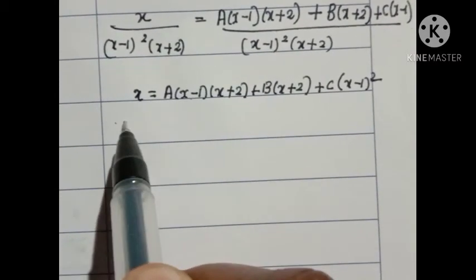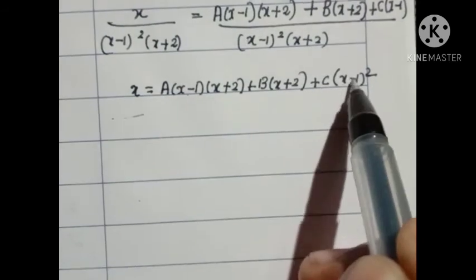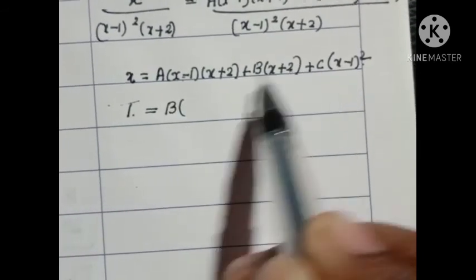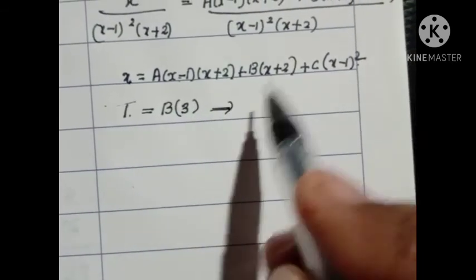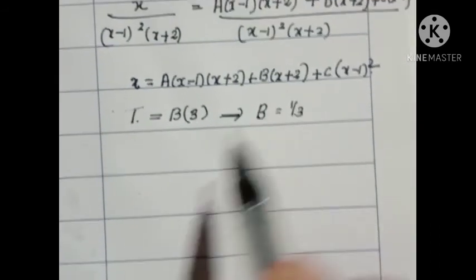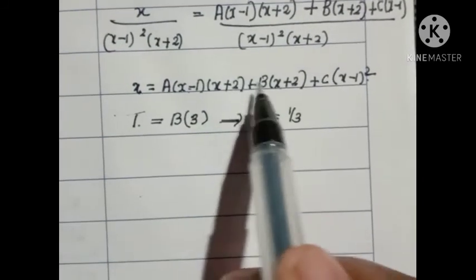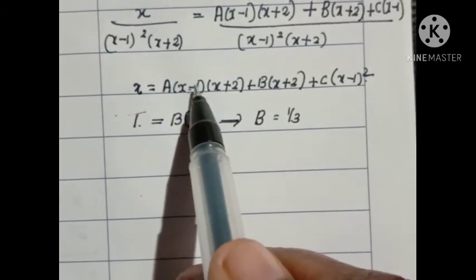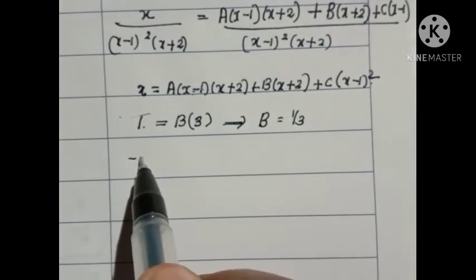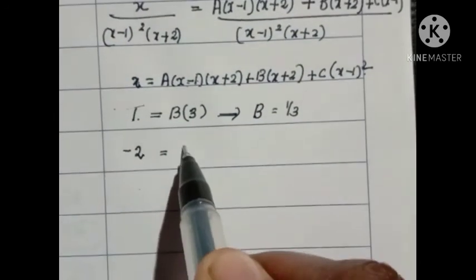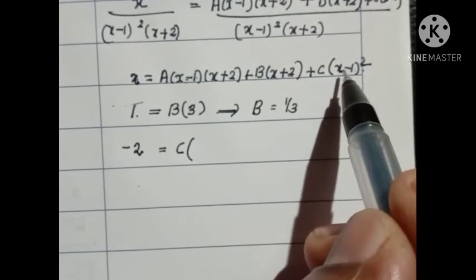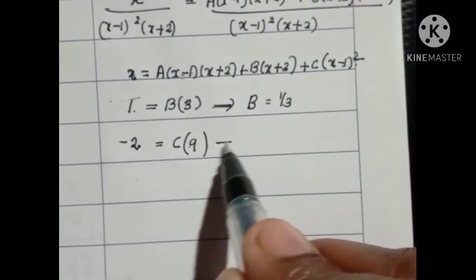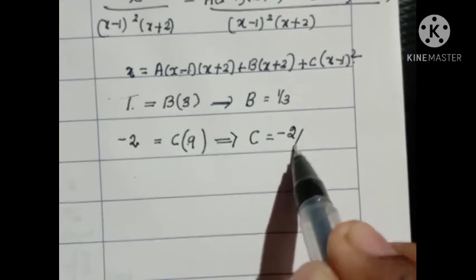When x = 1, the first and third terms become 0. So 1 = B(1 + 2) = 3B, giving B = 1/3. When x = −2, the first and second terms become 0. So −2 = C(−2 − 1)² = C(−3)² = 9C, giving C = −2/9.